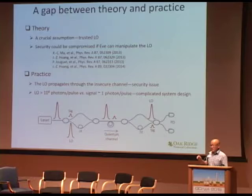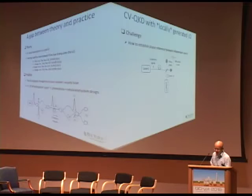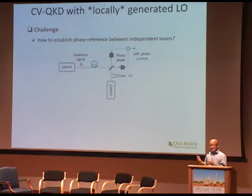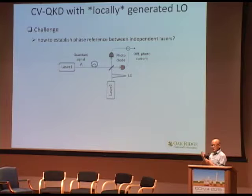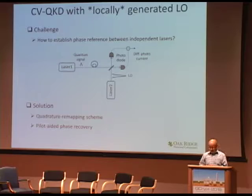Another problem is that the local oscillator is much stronger than the quantum signal itself, so a complicated system is needed to separate them effectively at the receiver's end. To address this, it makes sense to generate the local oscillator at the receiver's end with an independent laser source. Our solution includes two ideas: the first is the quadrature remapping scheme, and the second is the pilot-aided phase recovery scheme.